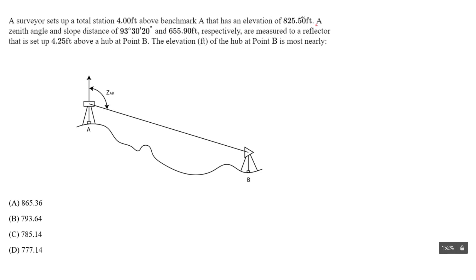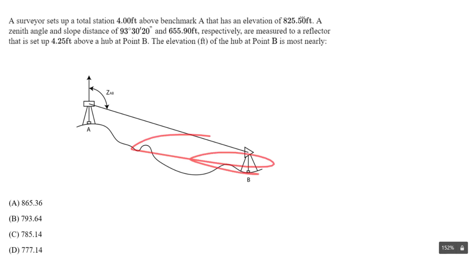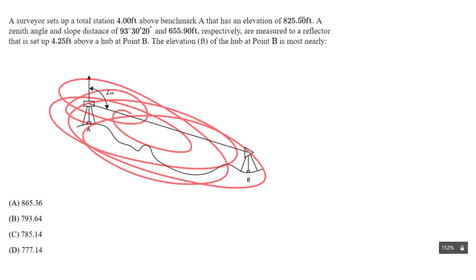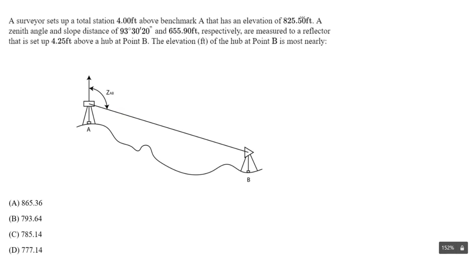So what's happening here: we have a zenith angle and a slope distance measured to a reflector set up 4.25 feet above a hub at point B. The elevation in feet of the hub at point B is what we need to find. This is quite complicated if you do not visualize it with a picture. On the FE exam, you might not be given a picture, so you have to visualize this yourself for a total station survey.